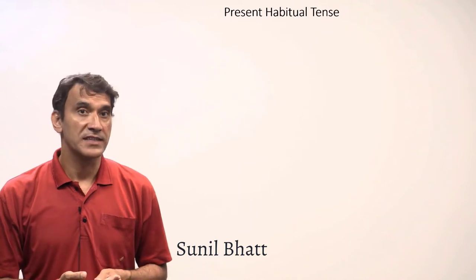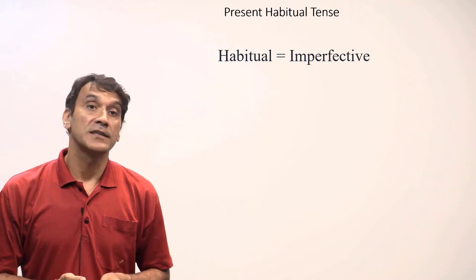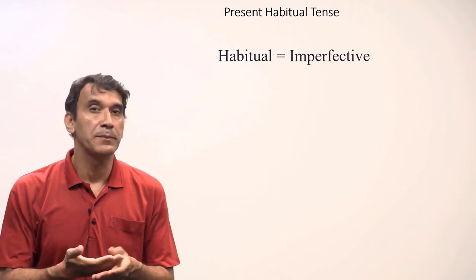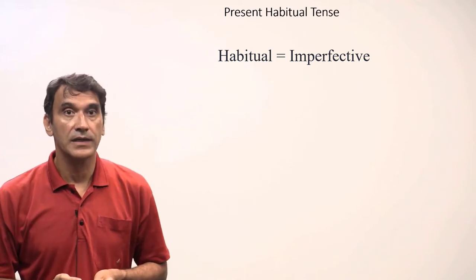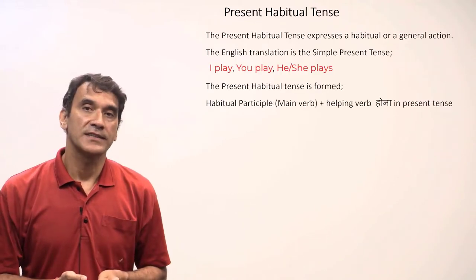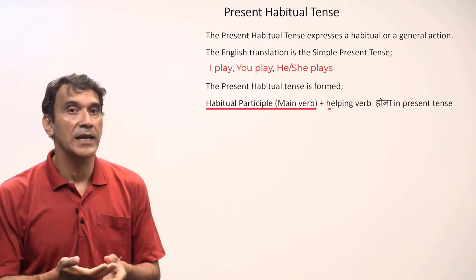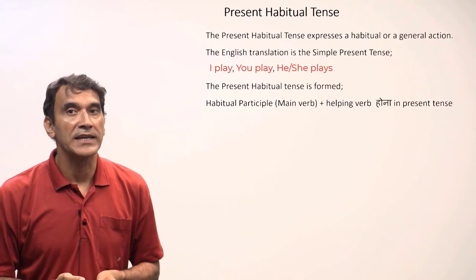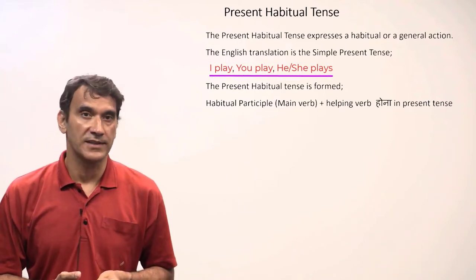The next grammar point is present habitual tense, also called present imperfective tense. The terms habitual and imperfective are synonyms in this case. The present habitual tense is formed with the habitual participle and the helping verb hona in present tense. It can be translated into English with a simple present tense such as I play, you play, he or she plays, etc.